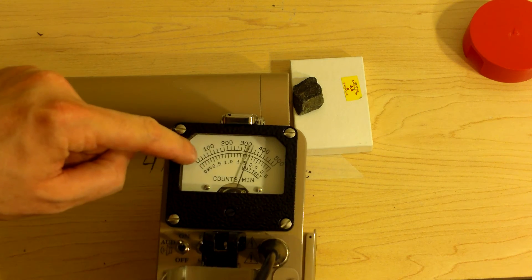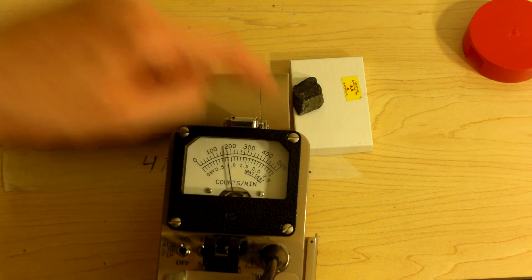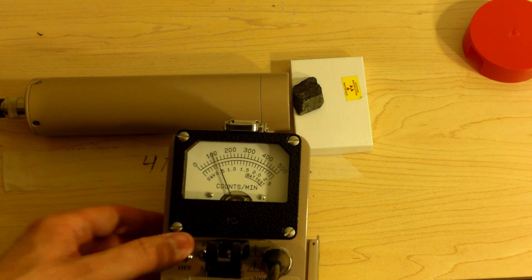Let's switch the scale to 0, 100, 200, 300, 400, 500,000, just to see where we are. We are at 80,000 counts per minute.